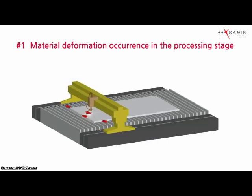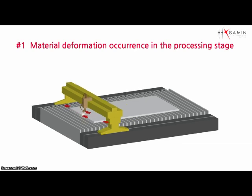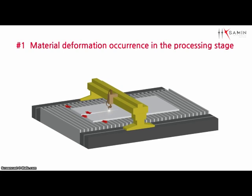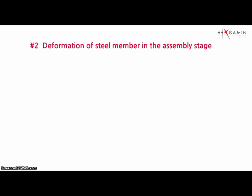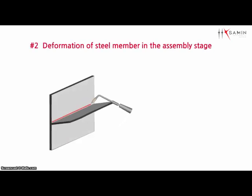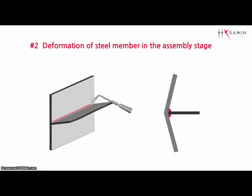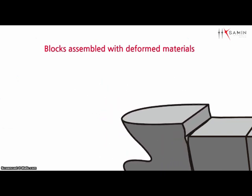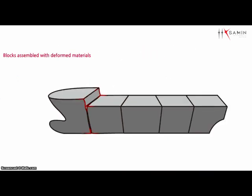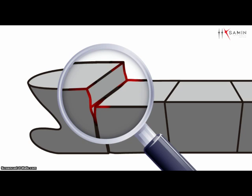First, material deformation is likely to occur due to various factors in the process stage, such as deformation caused by heat that occurs during steel cutting. Secondary material deformation is also likely in the assembly stage, such as deformation caused by heat during assembly. The hull exterior of blocks is likely to be unmatched when blocks assembled with deformed materials are erected in the processing and assembly stage.